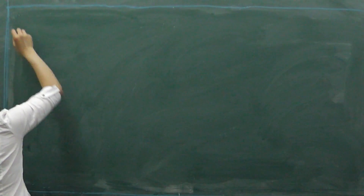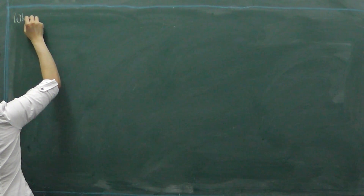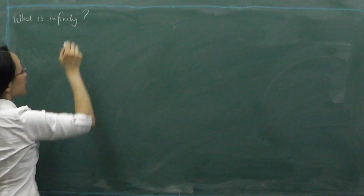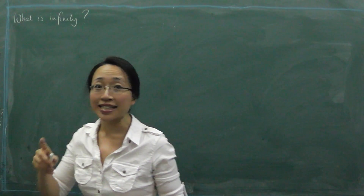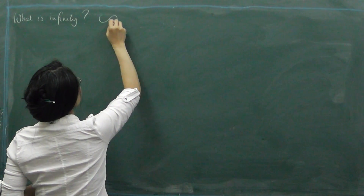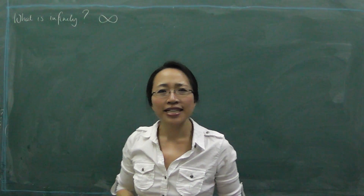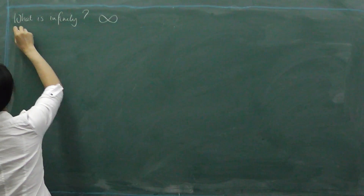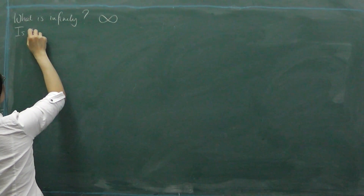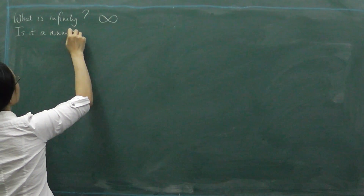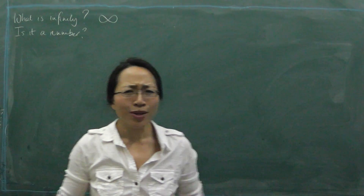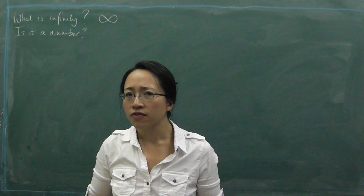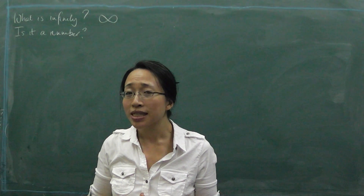So what is infinity? We often write infinity with that funny sideways eight symbol. And the question is, can we use it as if it were a number? Is it a number? Well, to answer that question we need to know what a number is. And that's really difficult — I'm not sure I could say. Can you say what a number is?